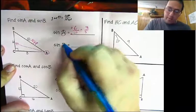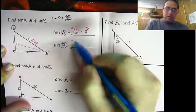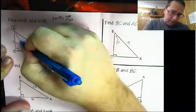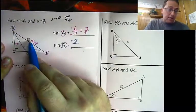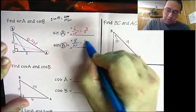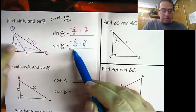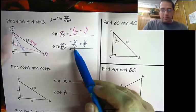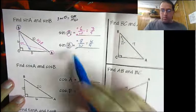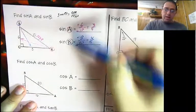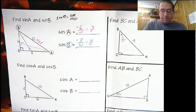Now let's find the sine of angle B. Angle B is right here — we want opposite over hypotenuse. The opposite of angle B is 8, and the hypotenuse is the same, which is 10. So 8 over 10 reduces to 4 over 5. Notice the sine of angle A is not the same as the sine of angle B — the opposite side is different depending on which angle you're looking at. This is why it is very important to specify the angle.